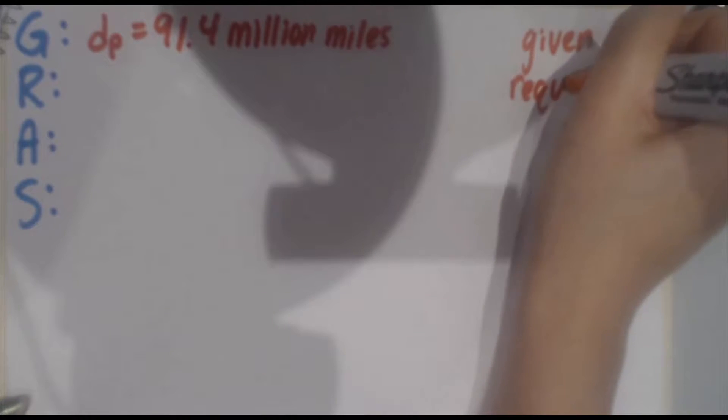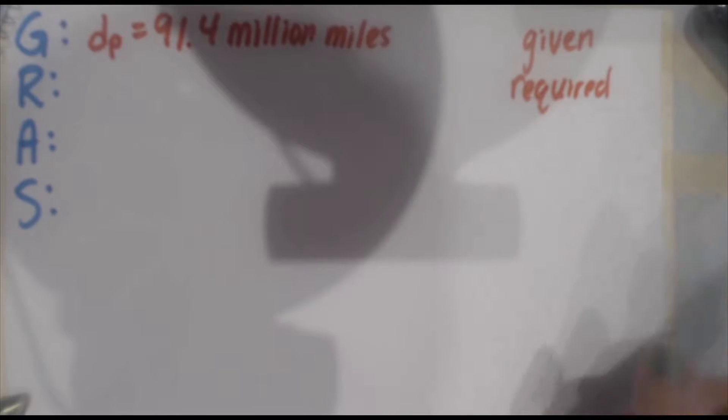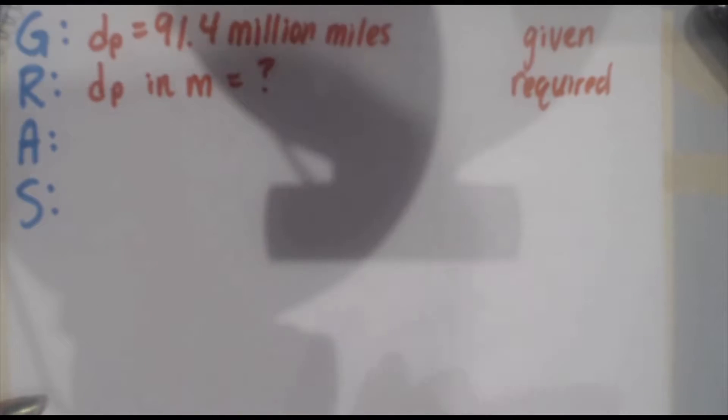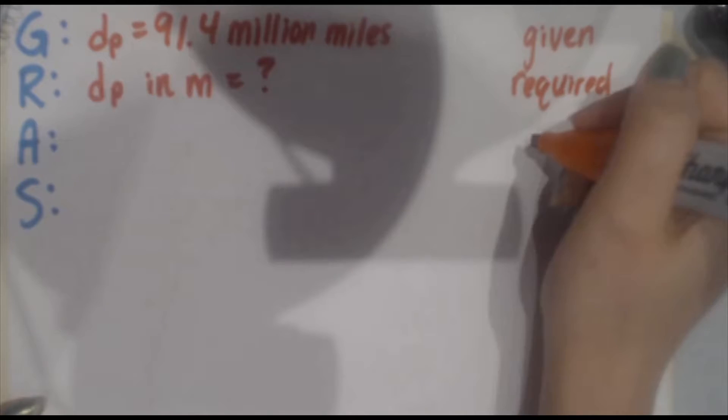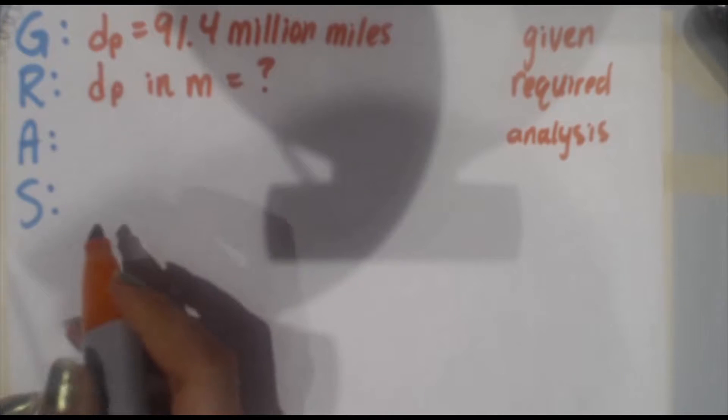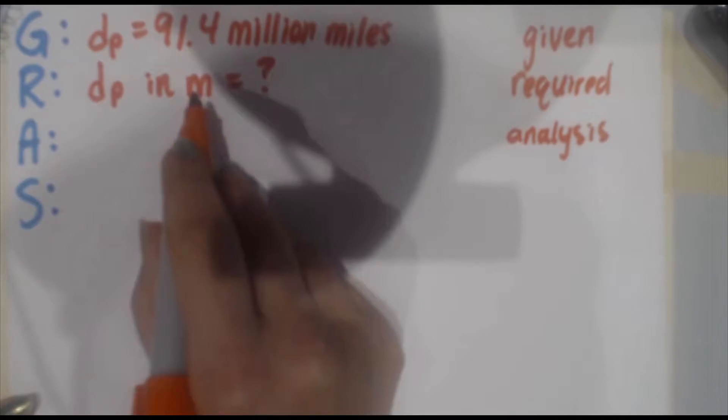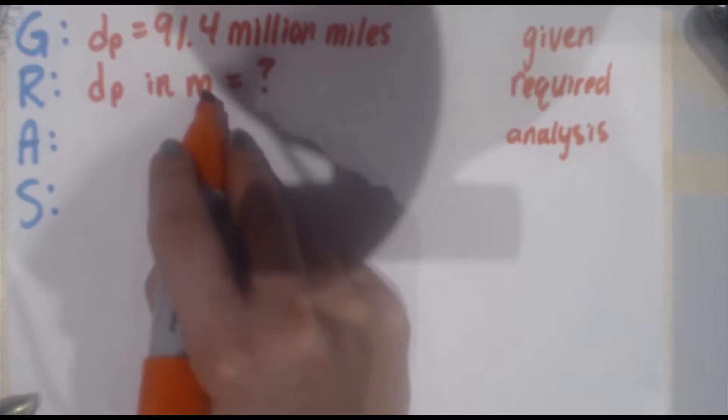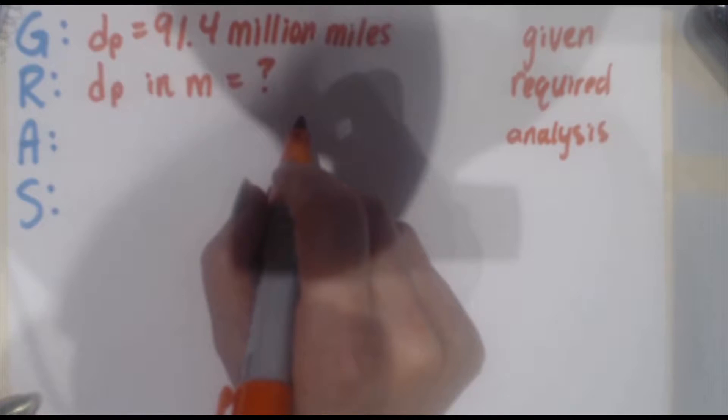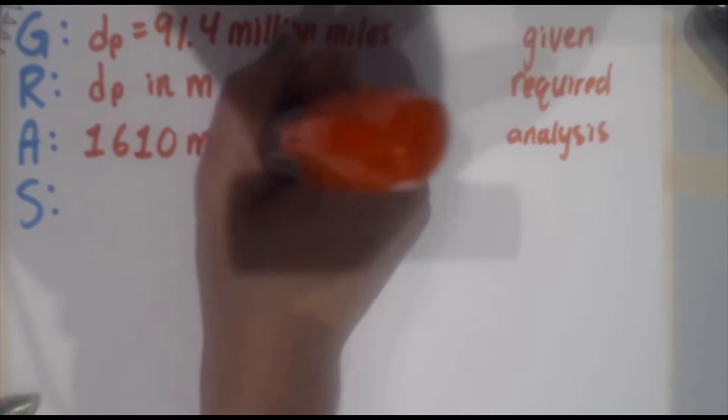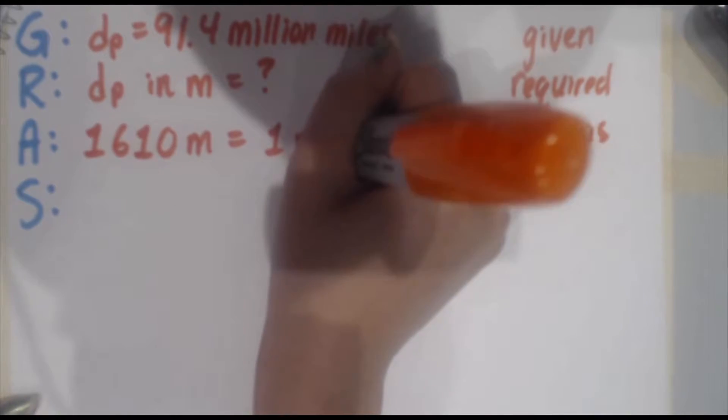R is what's required. So what do you need to find? We're looking for DP in meters, so DP in M equals question mark. A is analysis. That is either a statement or a fact. Usually in these types of questions in physics, it's a mathematical statement that connects the R and the G entries. So what mathematical expression connects meters with miles? It turns out that 1,610 meters is equal to one mile.